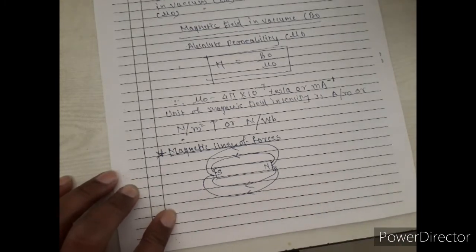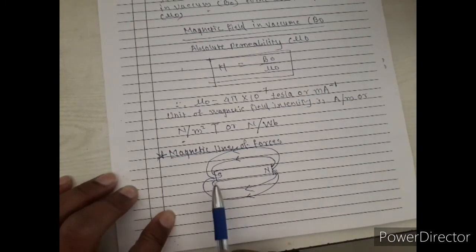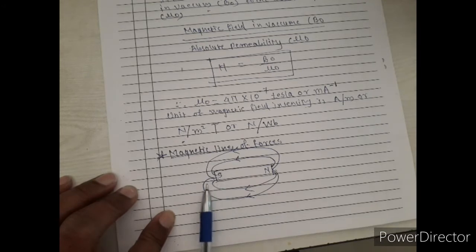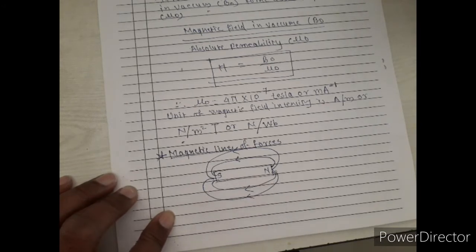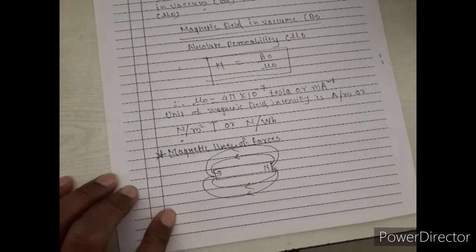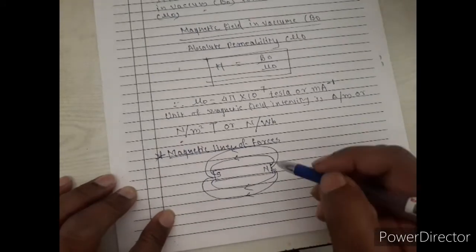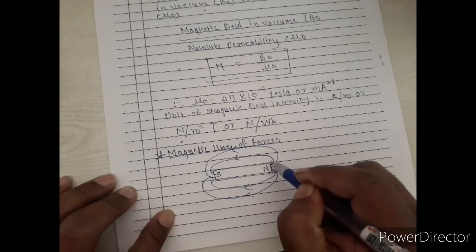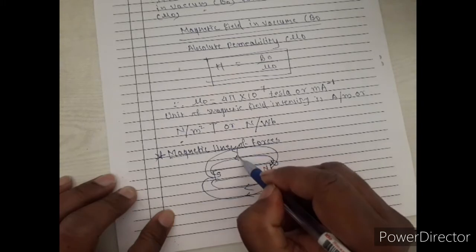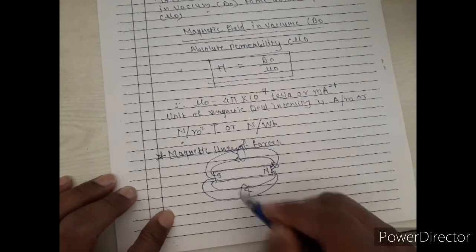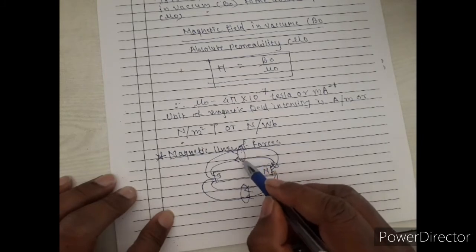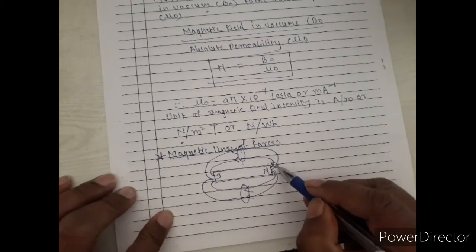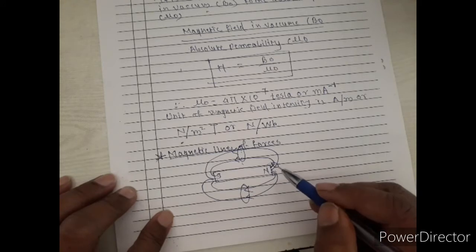They are similar to the electric lines of forces — only notations will be changed. Here in case of the magnetic field, south pole is there and here north pole is there. At the pole location, the density of lines of forces is very high as compared to the middle cross section, where the density is much lower.